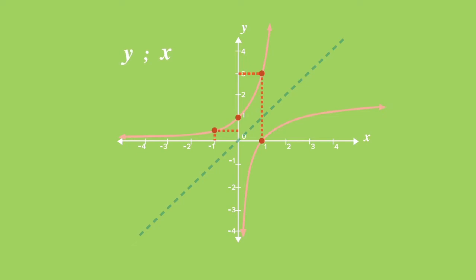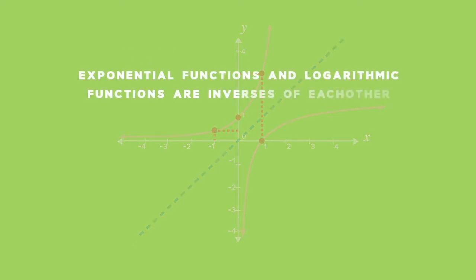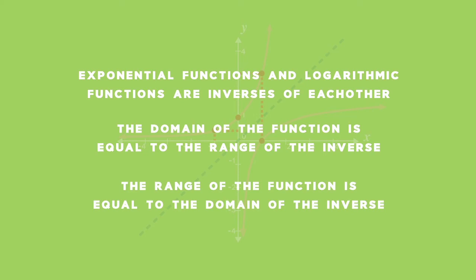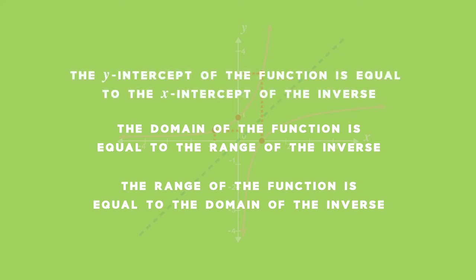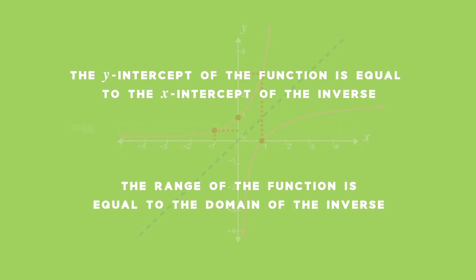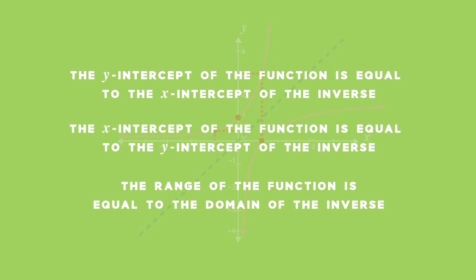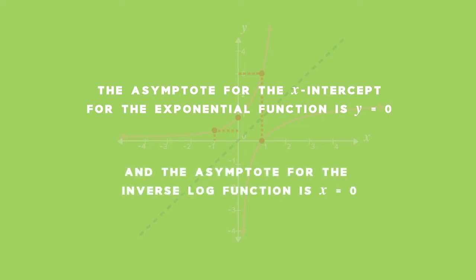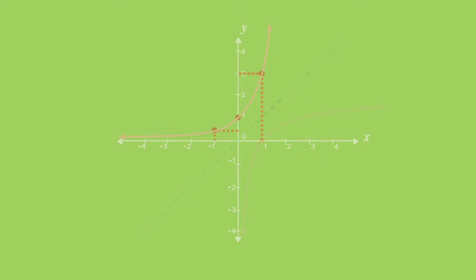Note the following important conclusions. The exponential function and logarithmic function are inverses of each other. The domain of the function equals the range of the inverse. The range of the function equals the domain of the inverse. The y-intercept of the function equals the x-intercept of the inverse. The asymptote for the exponential function is y equals 0, and the asymptote for the inverse log function is x equals 0. The graphs are reflected about the line y equals x.